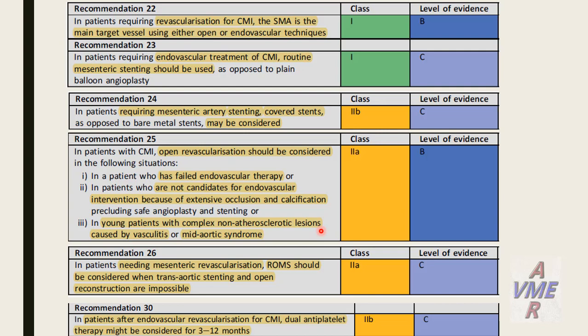Hybrid procedures should be considered when both endovascular and open reconstruction are impossible. Finally, in patients after endovascular revascularization for chronic mesenteric ischemia, dual antiplatelet therapy may be considered for 3 to 12 months. Thank you very much for your attendance.